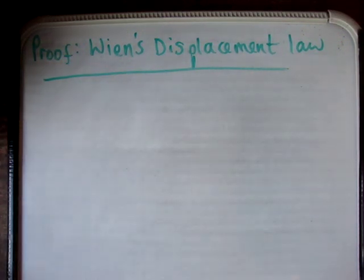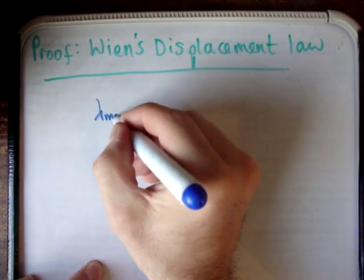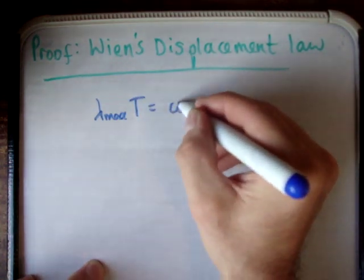So anybody studying a course in quantum physics, one of the first things you'll do is Wien's Displacement Law. And Wien's Displacement Law says that lambda max times the temperature is equal to a constant.